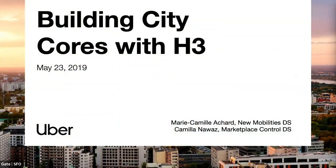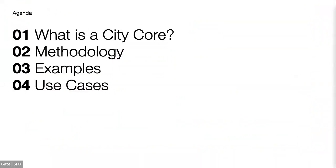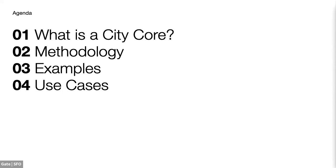How does data science work with H3? Let's go through one of our projects: Silicores. Silicores are areas with high demand. Those are areas where Uber has the maximum activity, where most of our trips happen, and therefore where most of the rider experiences happen. That's also where we need drivers the most. We use the origin locations of our historical trips data to know where those high-demand places are.